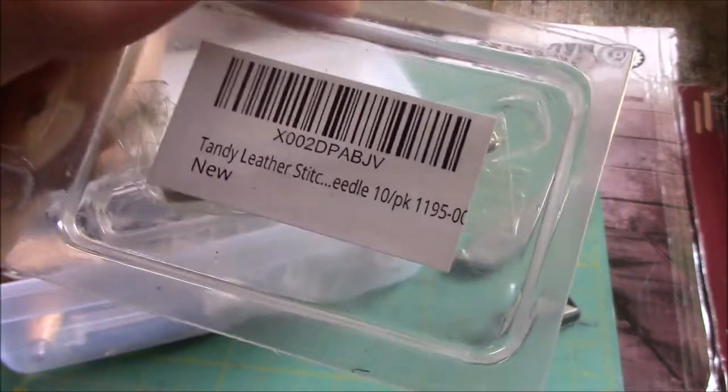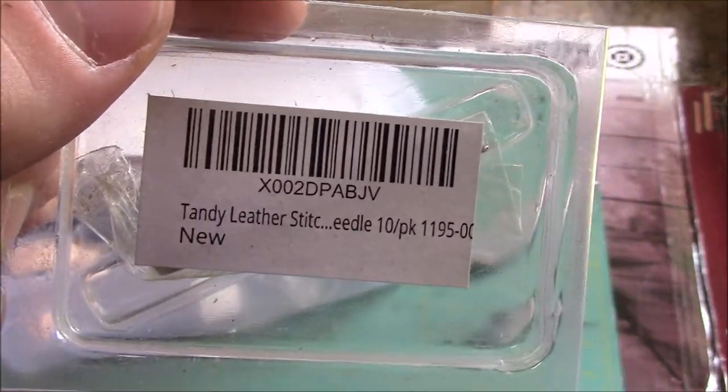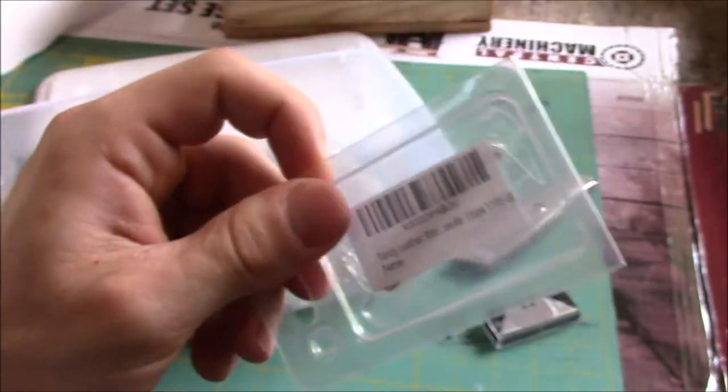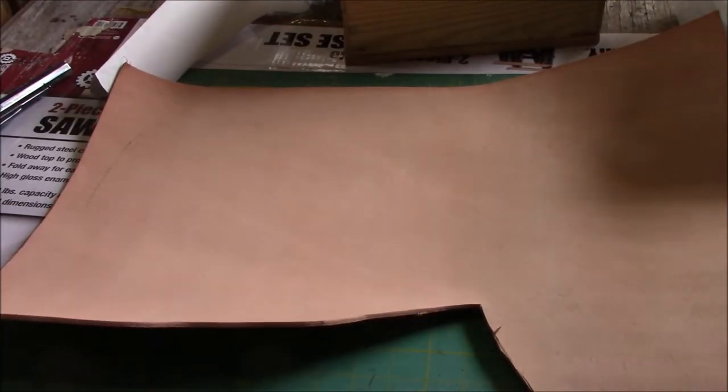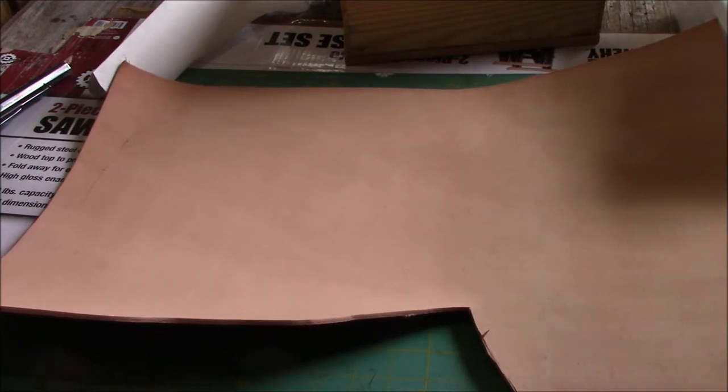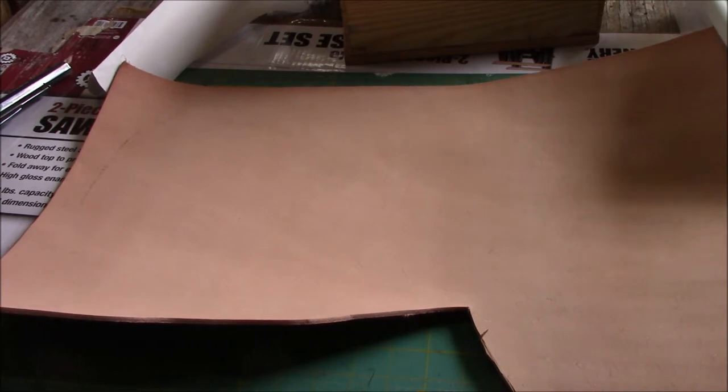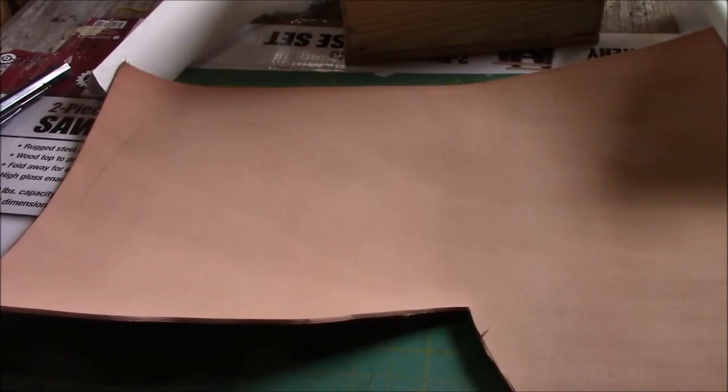Here's some Tandy leather stitching needles. You're also going to need leather. This is a 12 by 24 inch piece. Again, Amazon.com as well. It's about $22. That'll make you probably two or three regular size holsters. And if you're making small ones, make a few more than that. You could buy a bigger piece elsewhere, but if you just want a smaller piece to start off with, this is what I would recommend getting.